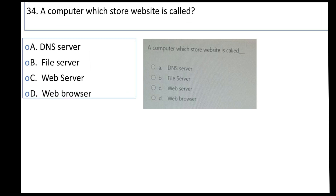Question 34: A computer which stores a website is called — A: DNS server, B: file server, C: web server, D: web browser.